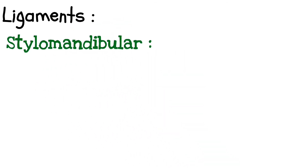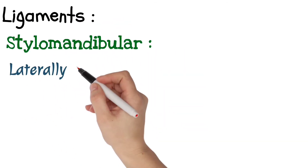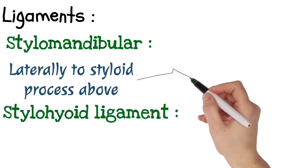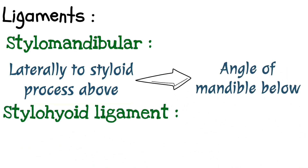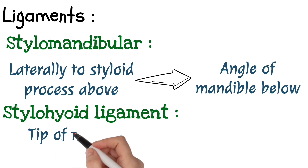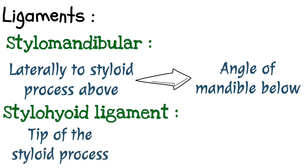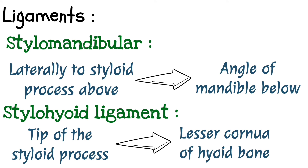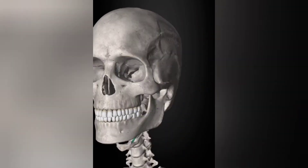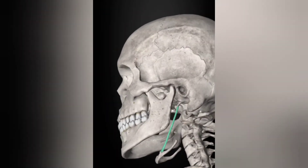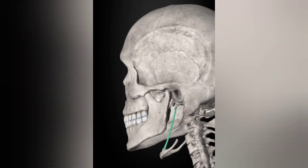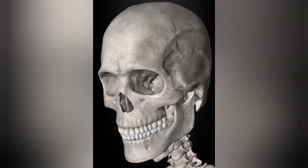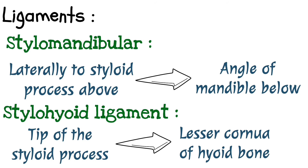Stylo-mandibular ligament is attached laterally to the styloid process above and the angle of the mandible below. The stylohyoid ligament extends from the tip of the styloid process to the lesser cornu of the hyoid bone.